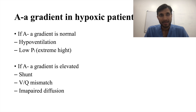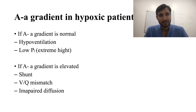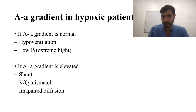In a hypoxic patient, if the A-a gradient is elevated, there is definitely a shunt, VQ mismatch, or impaired diffusion. If the A-a gradient is normal, the cause is hypoventilation or low inspired oxygen (low FiO2).